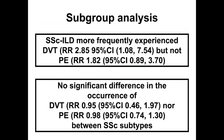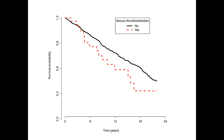When we looked at subgroups, we found a number of interesting hypothesis-generating findings. First, among patients with systemic sclerosis-associated interstitial lung disease, the frequency of deep vein thrombosis was higher, as well as the frequency of pulmonary embolism. Furthermore, we found no significant difference in the occurrence of DVT or PE between systemic sclerosis patients with limited or diffuse subtypes. When we looked at survival, we found an unadjusted hazard ratio of 1.16 and an adjusted hazard ratio of 1.02, suggesting no significant difference in survival between systemic sclerosis patients with and without venous thromboembolic events.